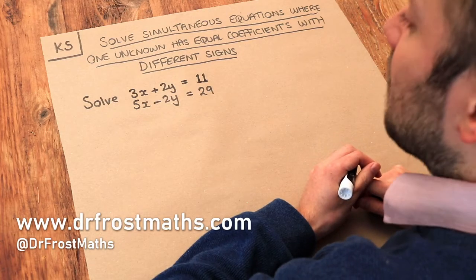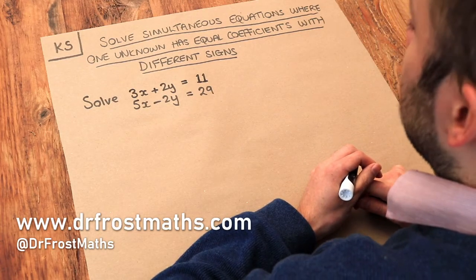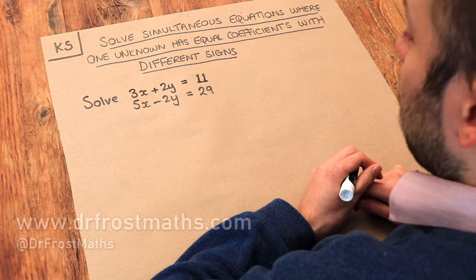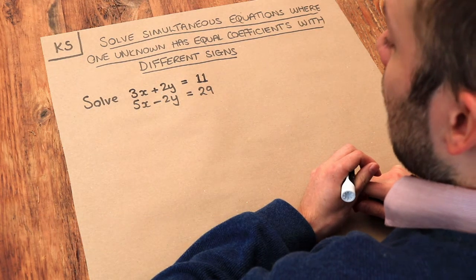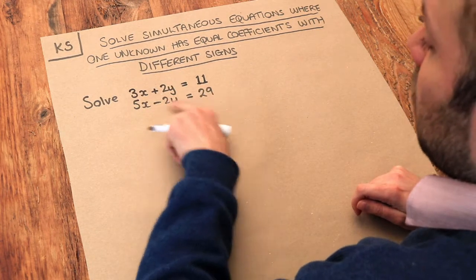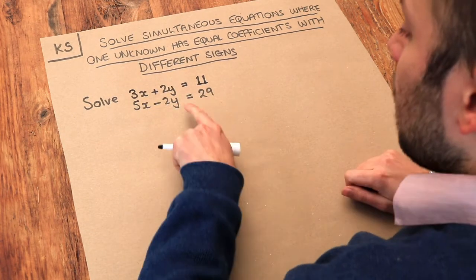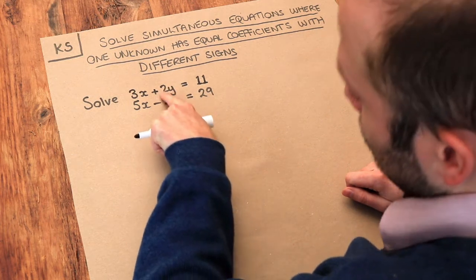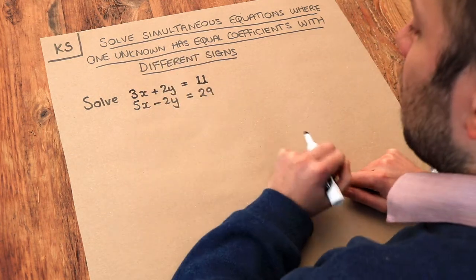Hello and welcome to this Dr. Ross Maths key skill video on solving simultaneous equations where one unknown has equal coefficients with different signs. And what I mean by that is in our simultaneous equations here, which I'll remind you of in a second what that means, we can see the number in front of the y in this case, they're the same number two, but one's positive, one is negative.